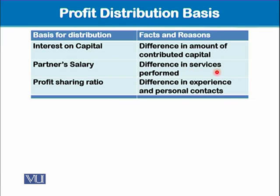When different partners are performing different services, an issue of profit distribution arises. To resolve that, we assign a salary to each partner performing services for the business. A part of the net profit — calculated the same way as under sole proprietorship — will be divided among partners according to their assigned salaries.